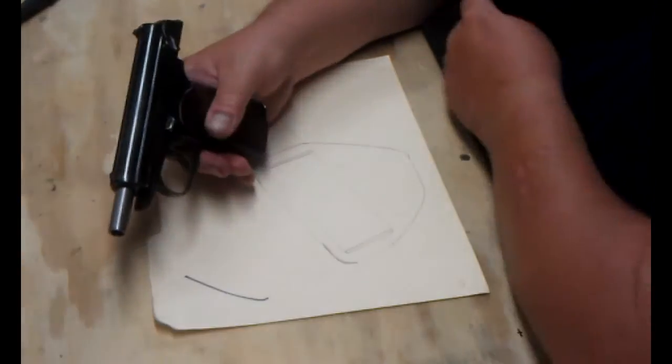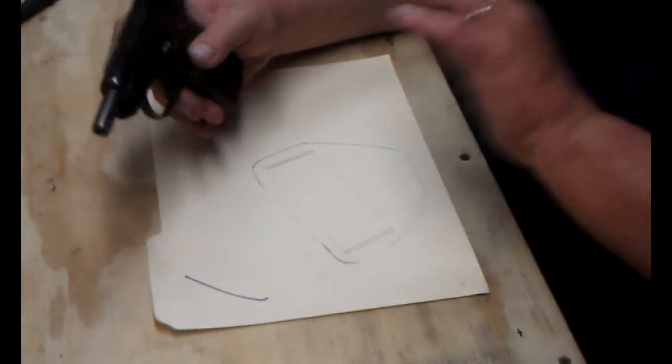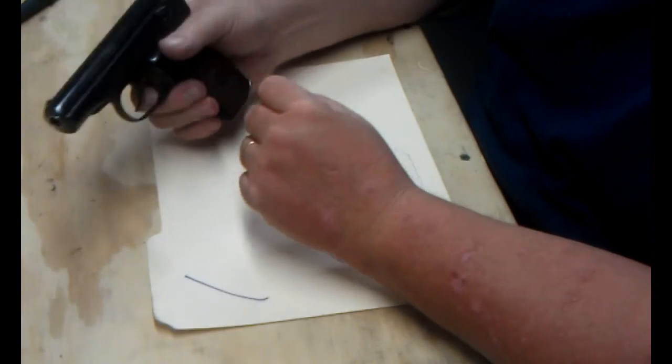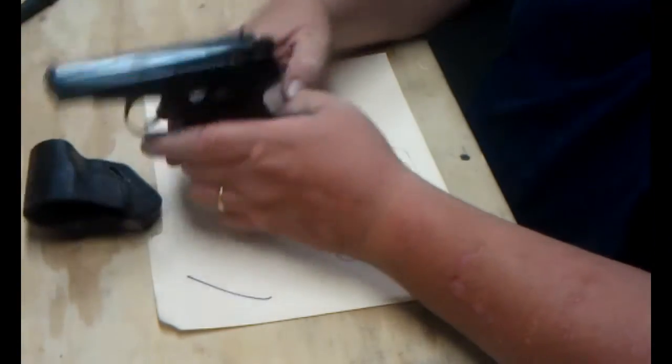I've got it loaded with Silver Bear 95 grain hollow point. As I've said before, this is what I've been carrying. And I want a new holster for it. And I want an outside the waistband.